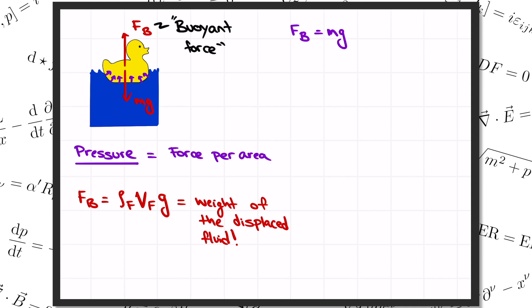So we get an equation, Mg equals rho Vg. Then we find that the volume of the object that sits below the surface of the fluid will be the mass of the object divided by the density of the fluid.